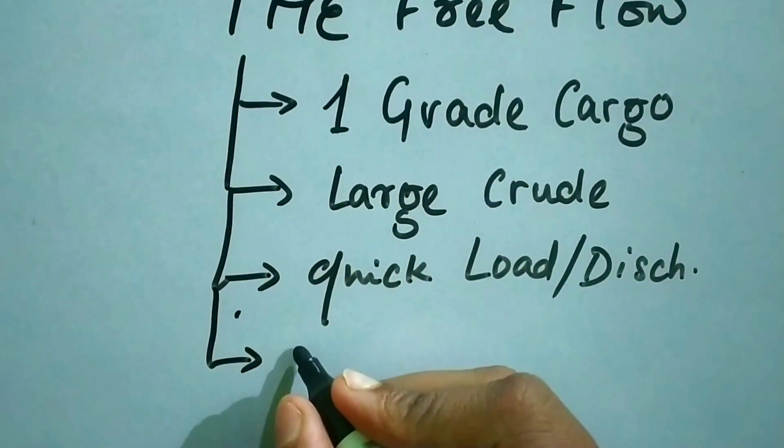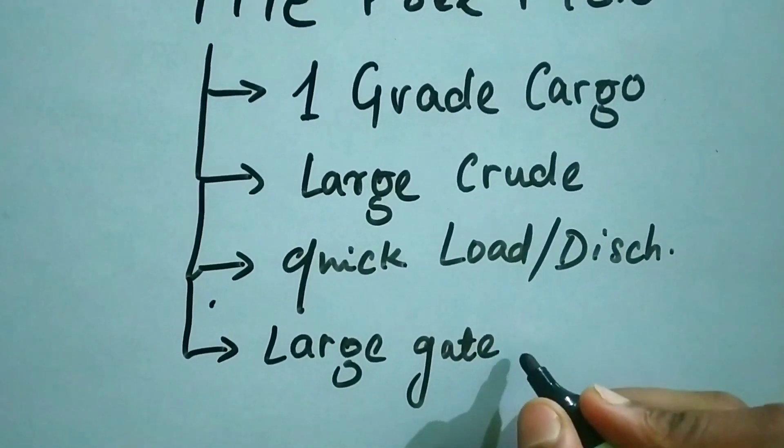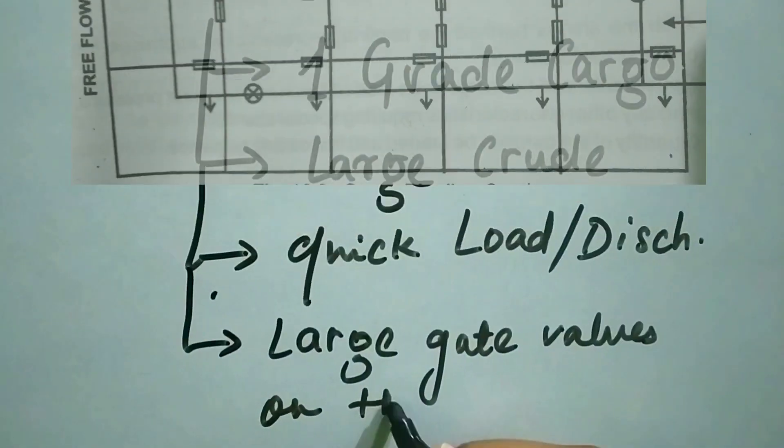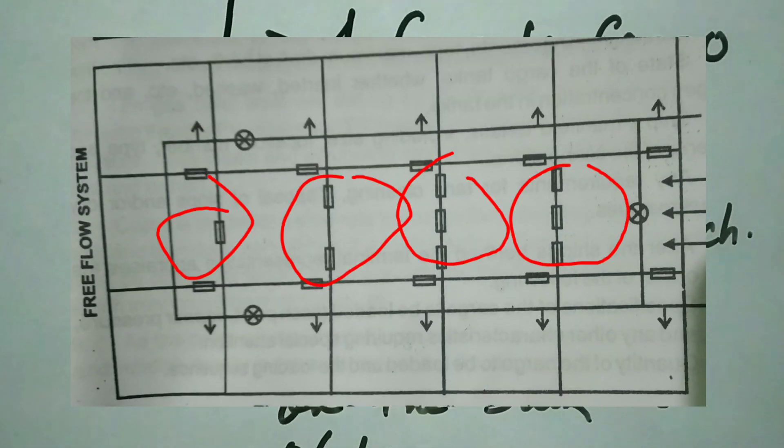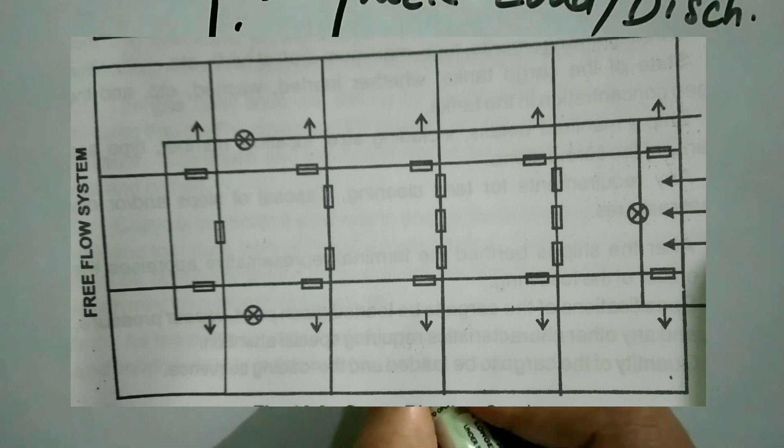In this type of system, large gate walls are built into the bulkheads of the tanks, as you can see in this picture, which allows the oil to flow from side tanks to the center tank.